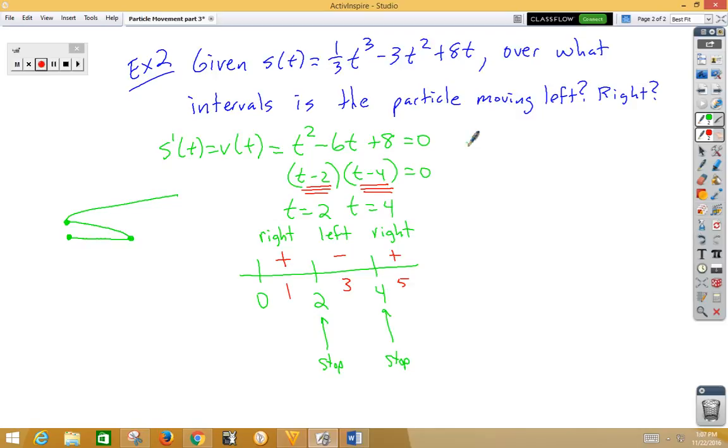So Pete traveled to the left over the interval two to four because velocity was negative. Pete moved to the right from zero to two and from four to infinity because velocity was positive.